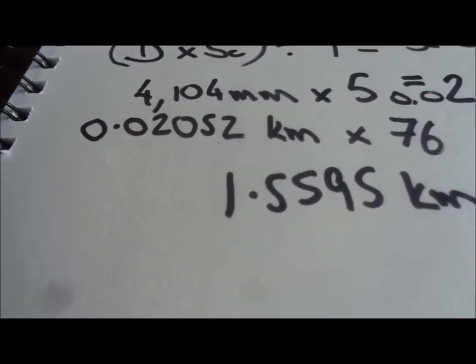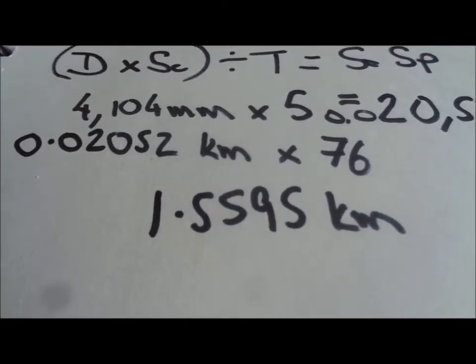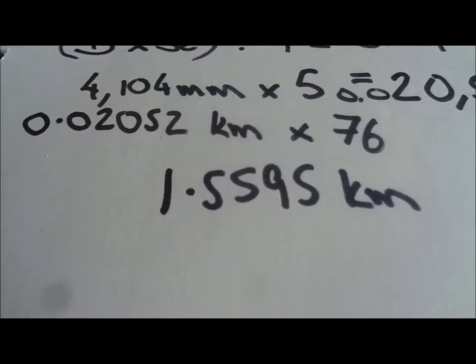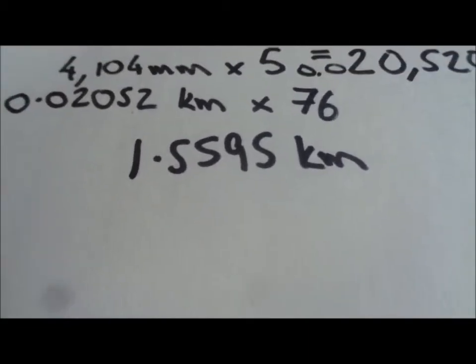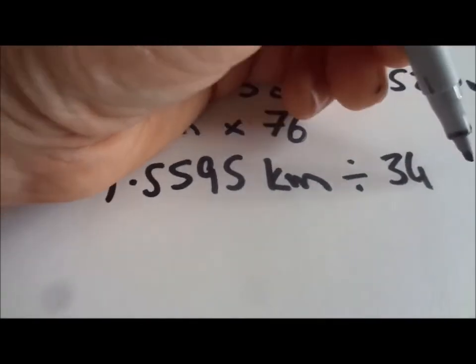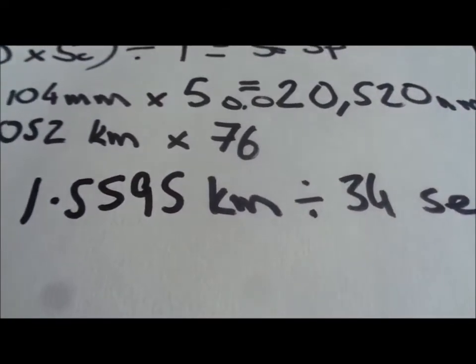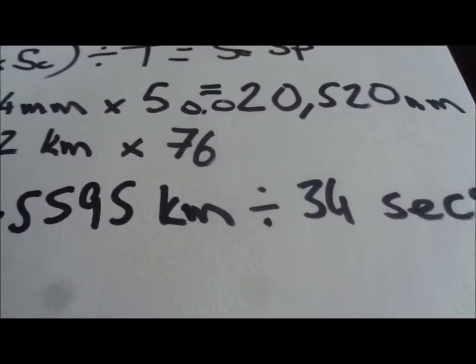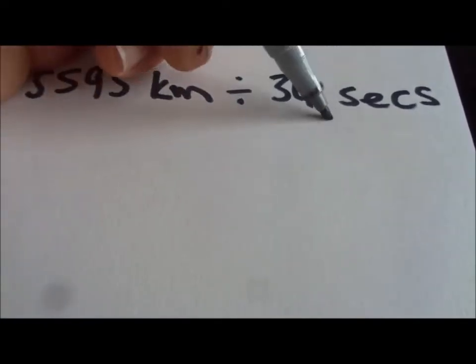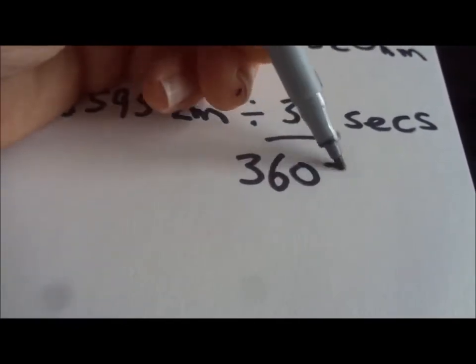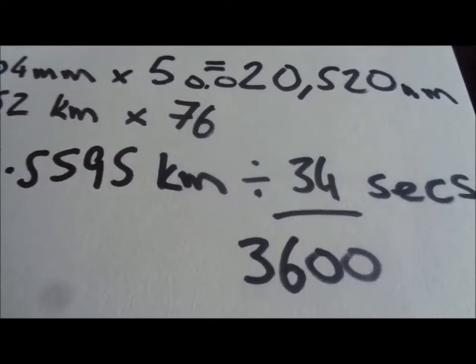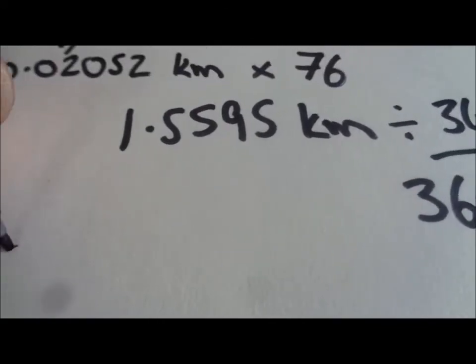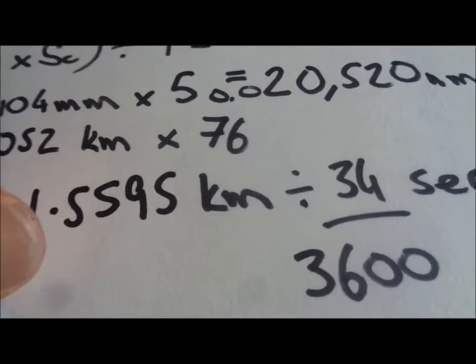So that's our total distance in real terms now, as we've done the scaling up. And we just have to divide that by the time. The time we went around our track was 34 seconds. So we want to divide it by 34 seconds. In actual fact, we don't want kilometres per second. We want kilometres per hour. So to make that into hours, we have to divide the 34 by 3,600. Because there's 3,600 seconds in an hour. So the answer of that should be 0.00944 recurring.